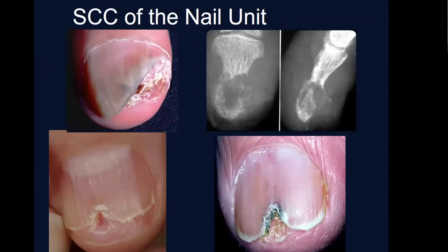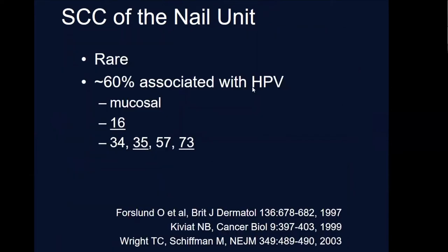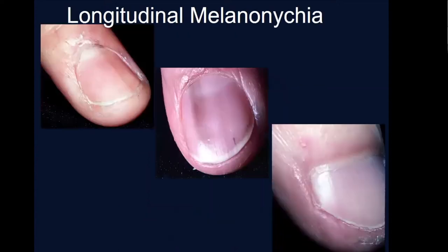A typical wart that was unresponsive to therapy turned out to be a squamous cell carcinoma — you have to see the DEJ in order to see the atypical keratinocytes. Squamous cell carcinoma of the nail unit is usually not subtle. Often there is destruction of bone associated with it and loss of nail plate. It is uncommon, most are associated with high-risk HPVs, and we treat them usually with Mohs surgery after making the diagnosis.